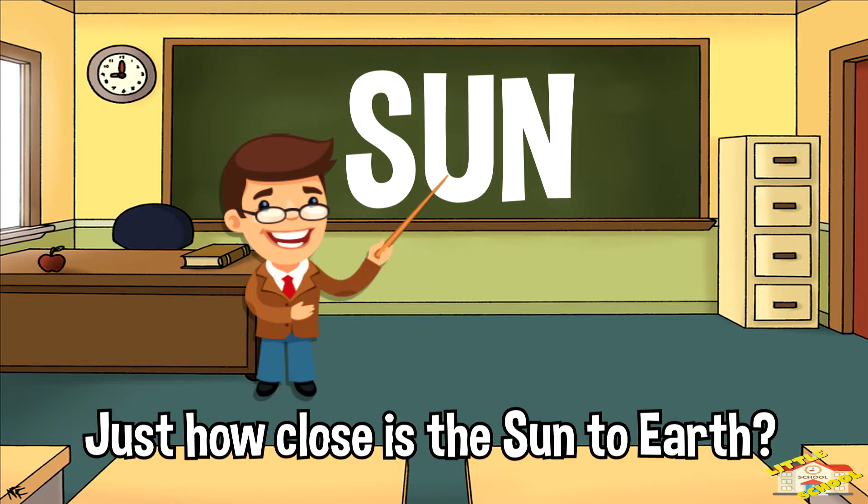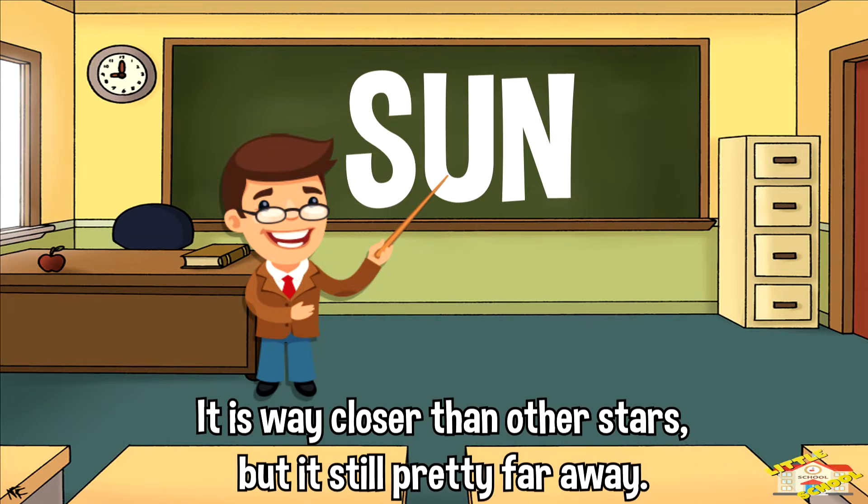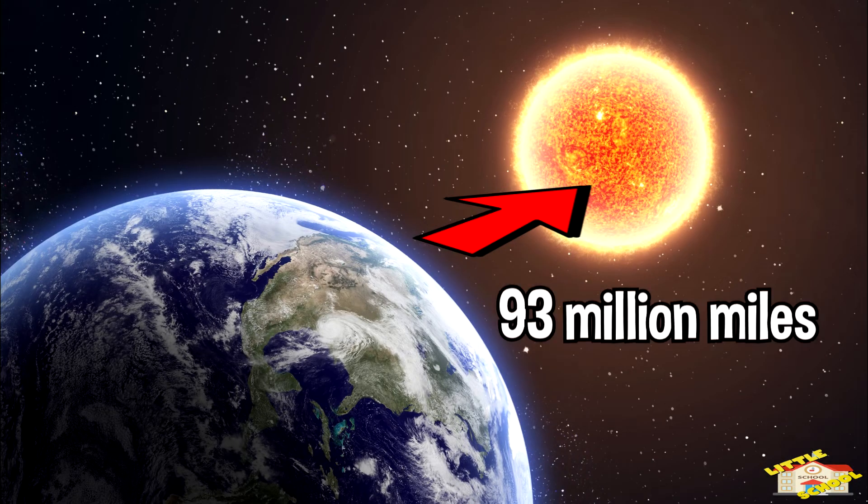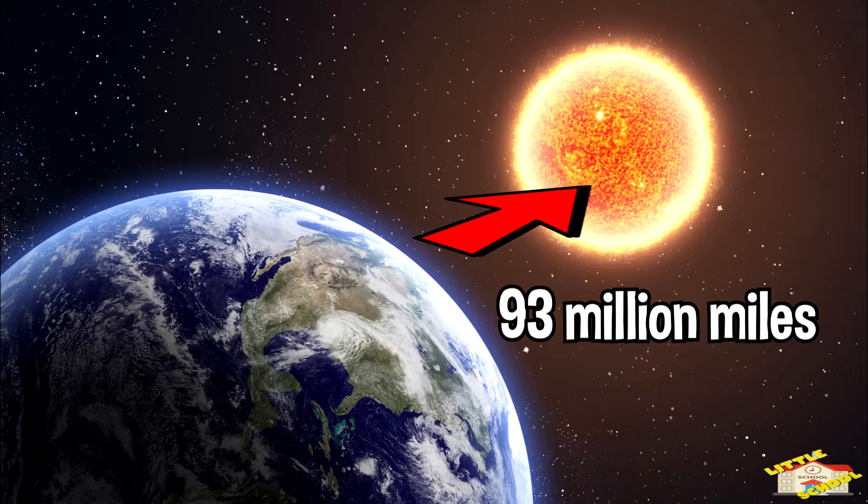Just how close is the Sun to the Earth? It is way closer than other stars but it's still pretty far away. The Sun is approximately 93 million miles away from Earth. That's 400 times farther than the distance between Earth and the Moon.